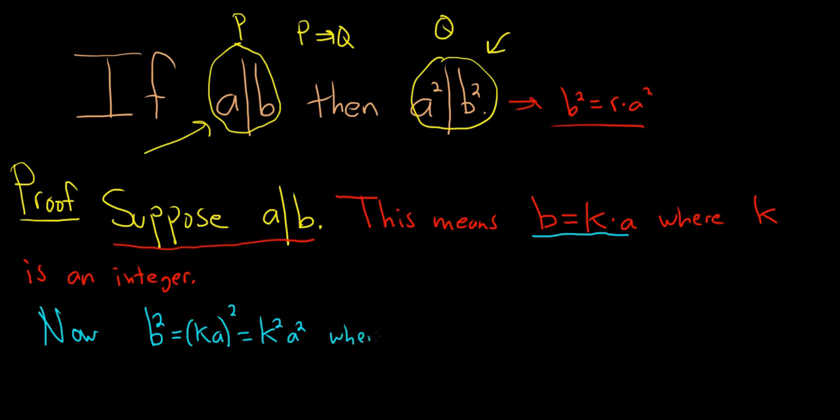Where? Well, k is an integer. That means that k squared is an integer as well. So we have that b squared is equal to an integer times a squared. That's exactly what it means for a squared to divide b squared.